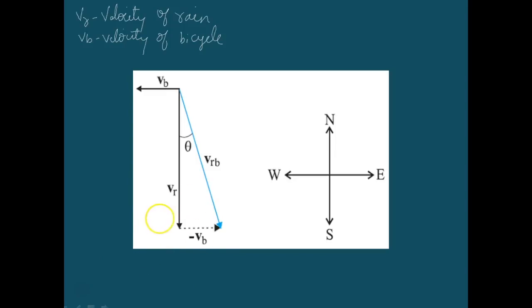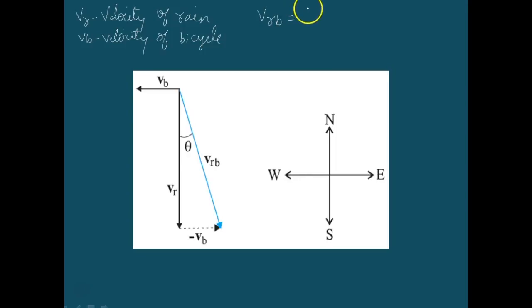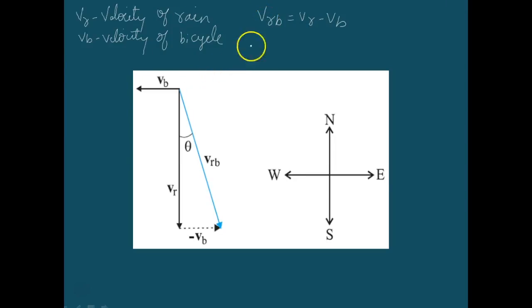Since the woman is riding, the velocity experienced by her is relative to the velocity of the rain. The velocity experienced by her is given by VRB, that is VR minus VB. This relative velocity vector makes an angle theta, and that theta is given by VB divided by VR.